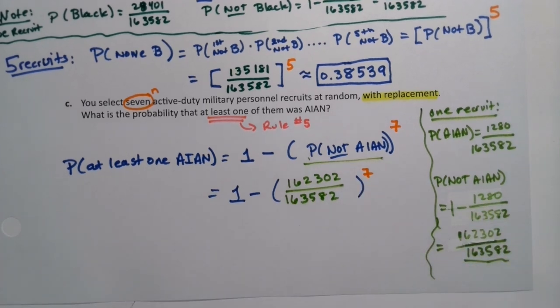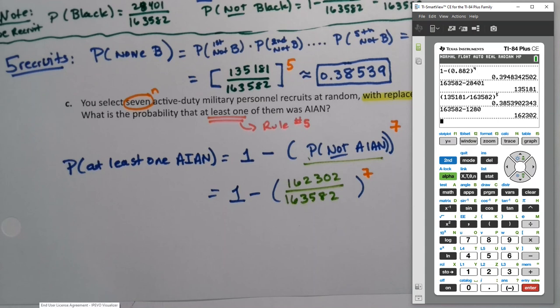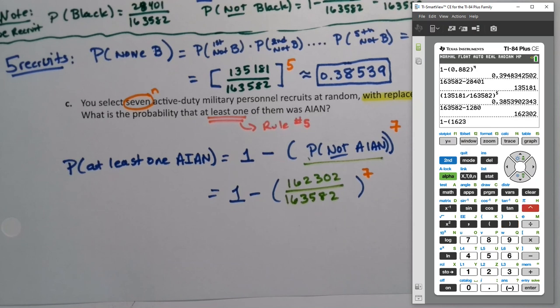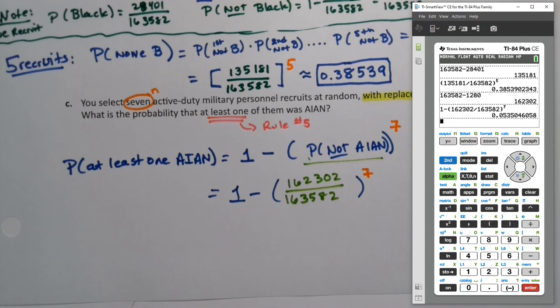And of course, we can do this all in one step in either Desmos or our calculators. You can type 1 minus parentheses 162,302 divide 163,582, close your parentheses, use the caret button to raise it to the seventh power. And there you have it, 0.0535.